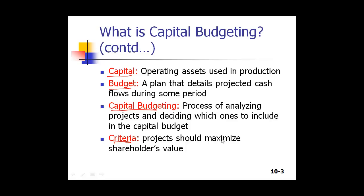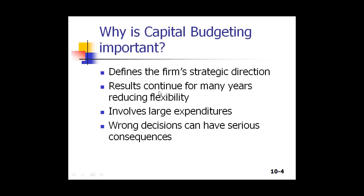Most of this chapter is about the criteria companies use to decide what projects to go forward with. Why is capital budgeting important? It defines the firm's strategic direction. What projects you do define your direction. For example, if a company based in Pakistan sets up a factory in Central Asia, that says something about its strategic direction. Or if a shoe company also starts making leather belts, that shows a new strategic direction.